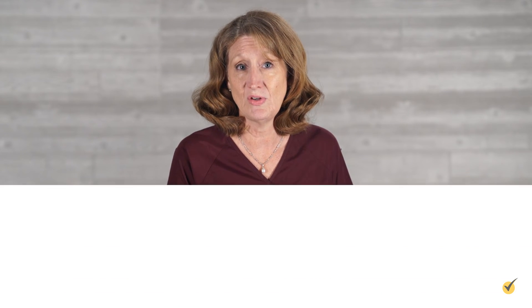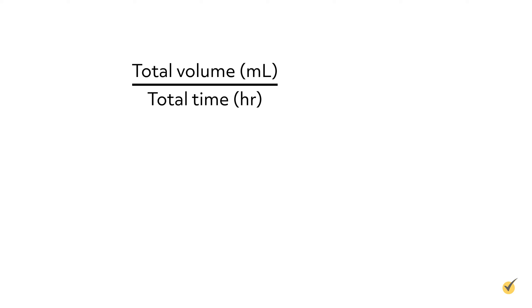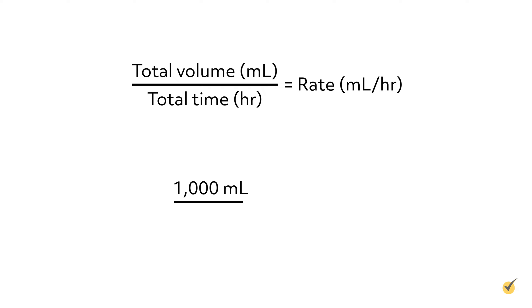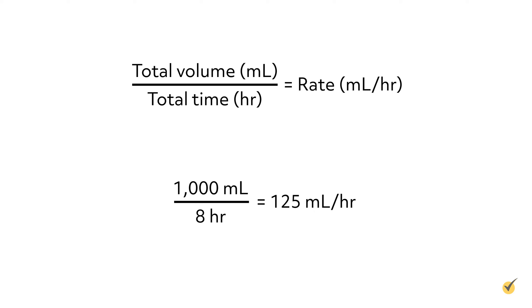If you simply need to figure out the infusion rate, take the total volume in milliliters divided by the total time in hours that the medication is ordered to be infused over, to equal the rate in milliliters per hour. For example, if you have 1000 milliliters normal saline to infuse over 8 hours, take 1000 milliliters divided by 8 hours to equal 125 milliliters per hour.